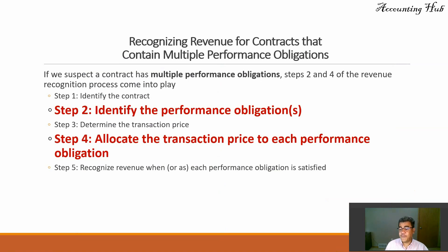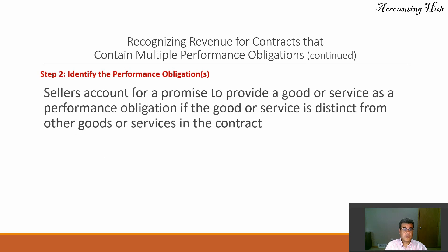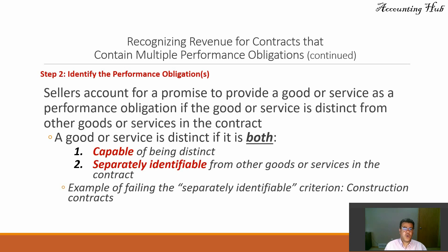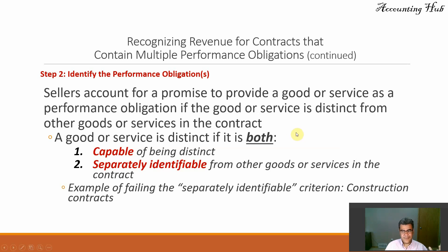Step two: identify the performance obligation. We have more than one, so what are they? And then the allocation. Sellers account for a promise to provide a good or service as a performance obligation if the good or service is distinct from other goods or services. A good or service is distinct if it is both — not any, both — capable of being distinct, and separately identifiable from other goods or services in the contract. For instance, I am purchasing a new vehicle. A vehicle has thousands of components, but I am not purchasing the components, I am purchasing the vehicle. So it is not multiple performance obligation because it is not separately identified in the contract.